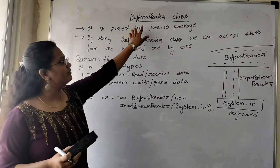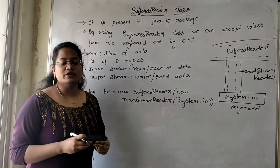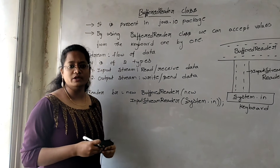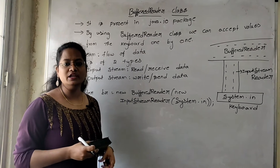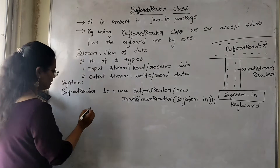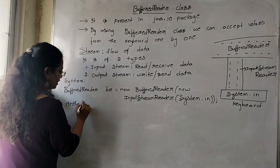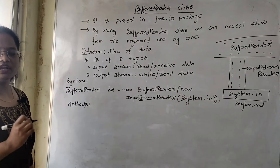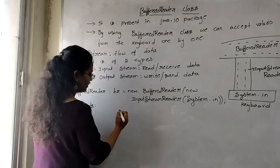When we are using BufferedReader Class, it will throw an IOException. If you are giving float instead of integer, or a string instead of float, it is going to throw an IOException. Or, if you forget about IOException, you can mention 'throws Exception' class, because Exception is the super class for all exceptions. Now we have to know the methods present in the BufferedReader Class.